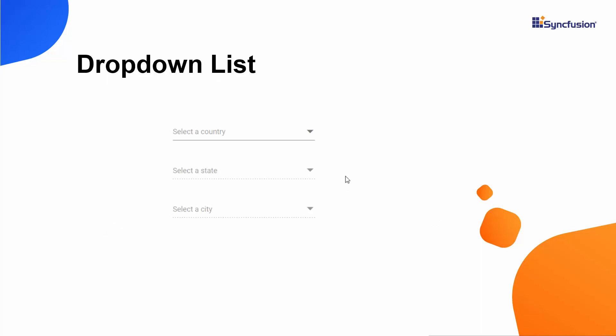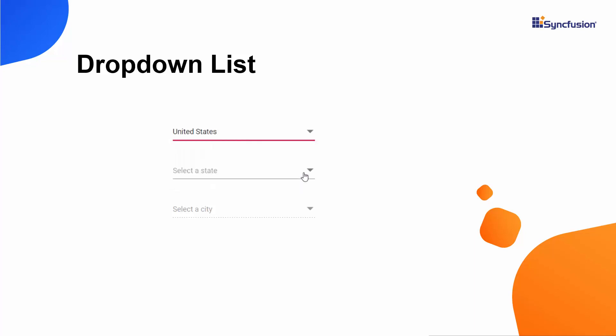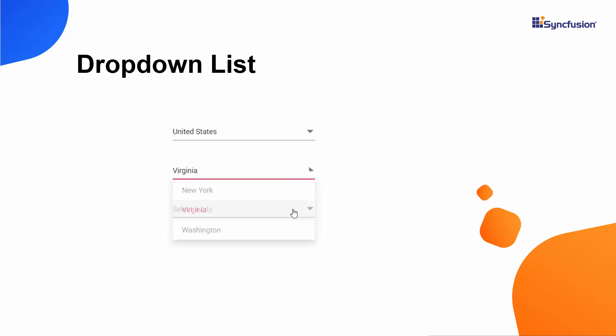Looking at this example, you can see a series of drop-down list components. When I select a particular country name from the country's drop-down list, the corresponding state's drop-down list is enabled. Similarly, when I choose a state from the state's drop-down list, the city drop-down list is enabled.